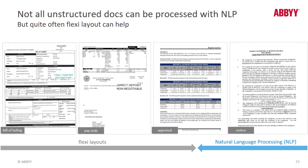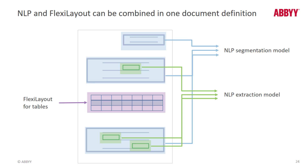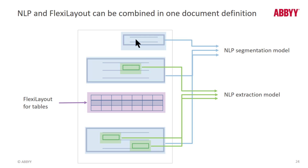Defining the segments first and then extracting entity data from within those segments — it's a very good example document. This graphic shows how NLP and FlexiLayout technologies can be combined. First, we have a FlexiLayout built to capture table data — that executes first. Then we've got an NLP model that captures segments: one segment standing alone gathering all data from a paragraph, and another segment defined to capture entities within it. The FlexiLayout will always execute first and NLP will execute after that.